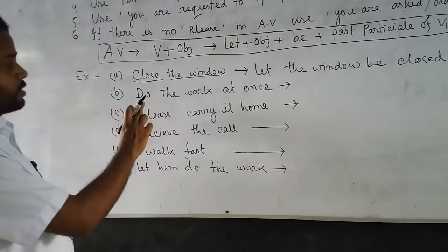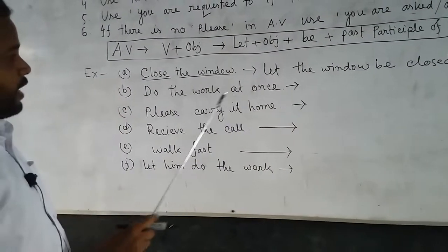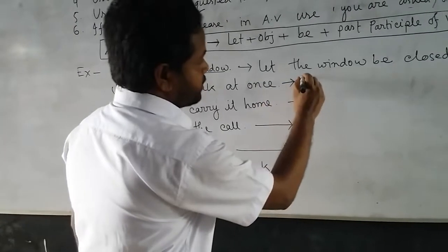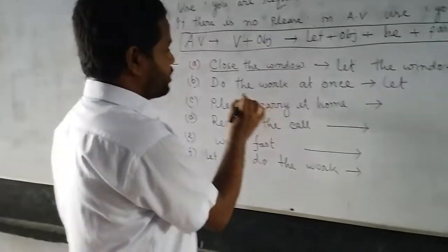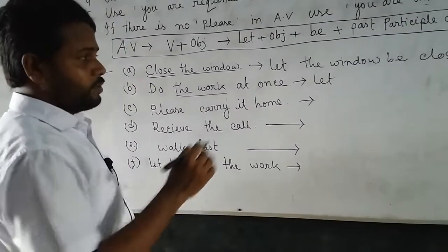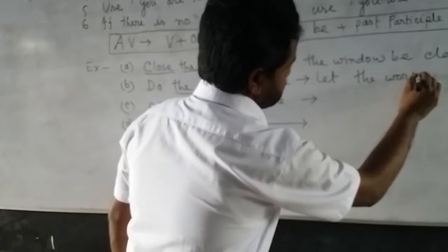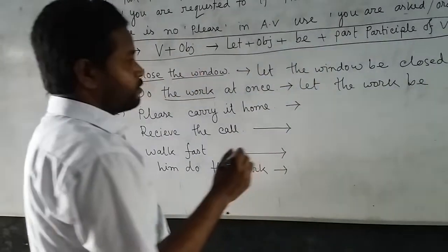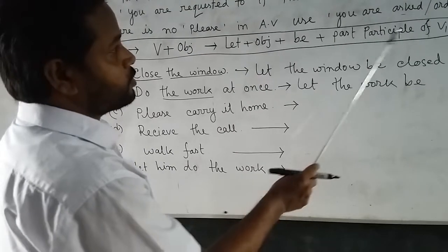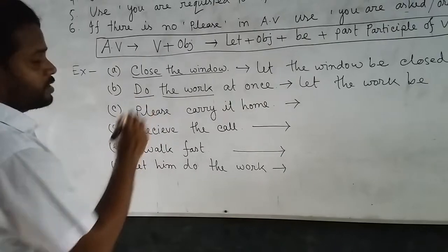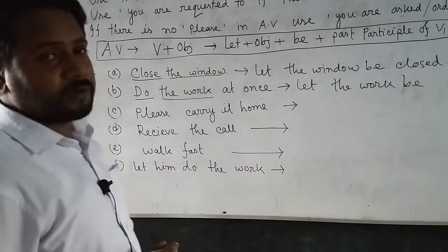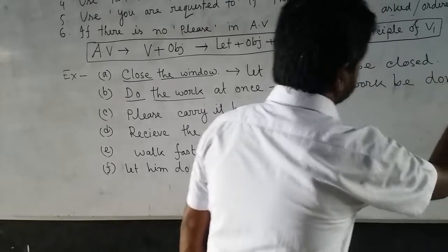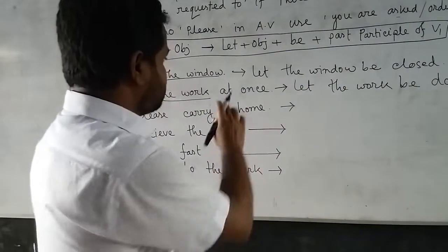Now, example B. Look at the sentence: 'Do the work at once.' Similarly, we add 'let' first. The object in this sentence is 'the work'. So: 'Let the work'. After that we add 'be'. Then we add the past participle form of the main verb. The verb is 'do' — do, did, done. So the passive voice is: 'Let the work be done at once.'